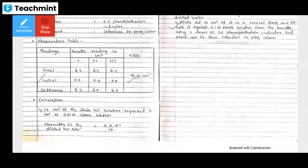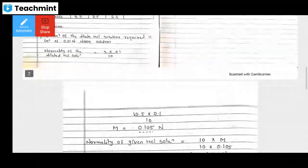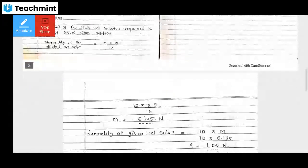Next is the observation table. When we take the readings of the titrations, we will get the readings. Initially all zeros, final readings 6.4, 6.4, 6.4. The difference is 6.4, so we are taking the concordant burette reading (CBR) here, and this CBR value is used for calculation purposes.